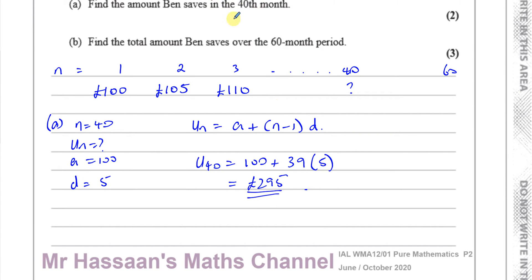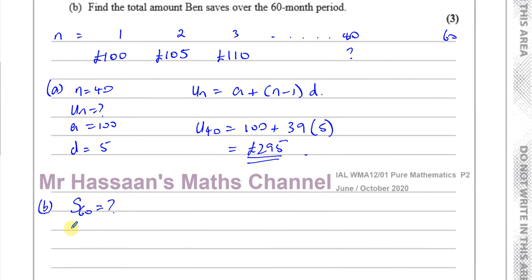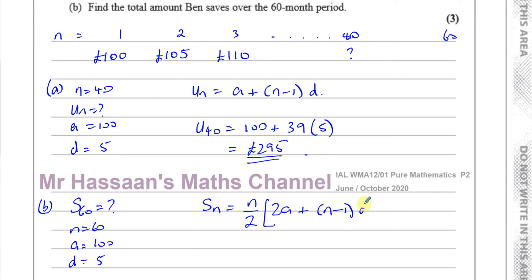For part B, we have to find the total amount that Ben saves over the 60-month period. We're looking for the sum of the first 60 terms, so N is 60. A is 100 and D is 5. We're going to use the formula for the sum of the first N terms: S_N equals N over 2 times 2A plus N minus 1 times D. This formula is also in the formula book, although sometimes you might be asked to prove the formula.